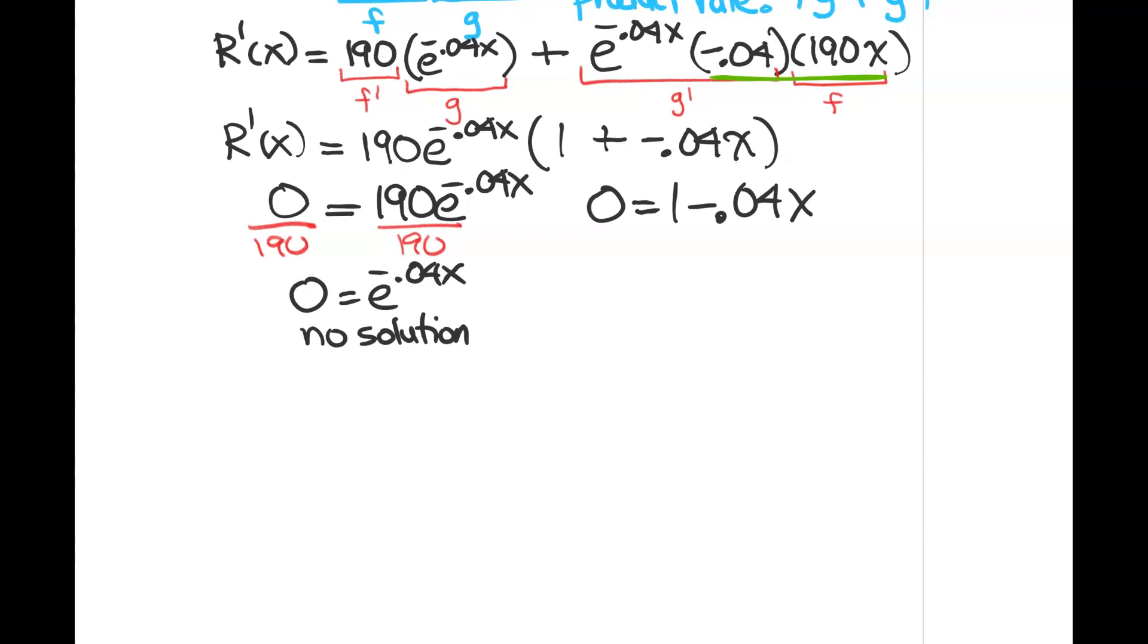However, over here, if I do a little solving, if I move my 0.04 to the other side, so if I add this 0.04x and bring it on over here, this is going to quickly give me a critical point. Dividing by 0.04x, if you take 1 and divide by 0.04, you're going to get 25. So we have a critical point here at 25.